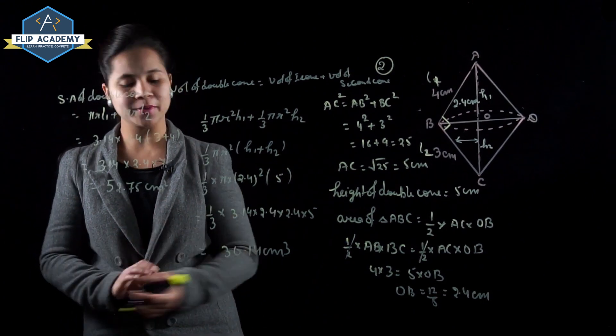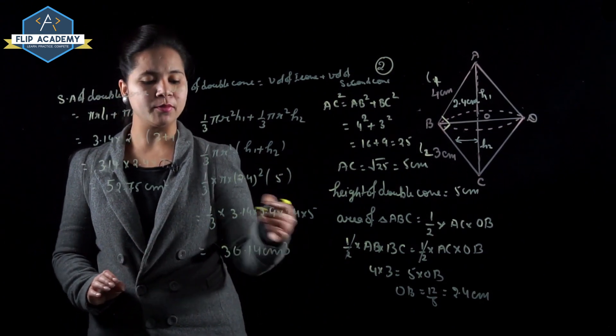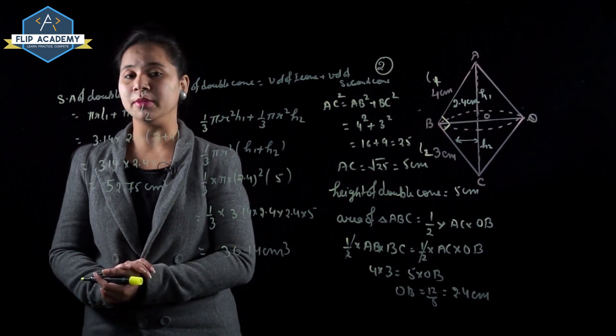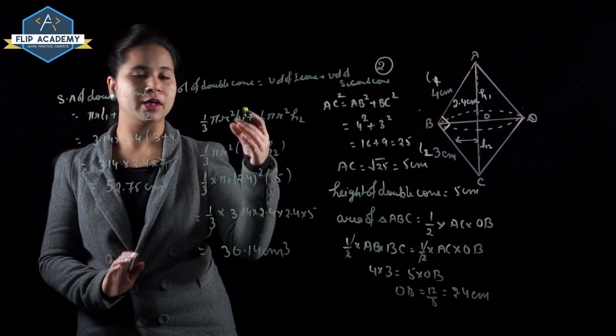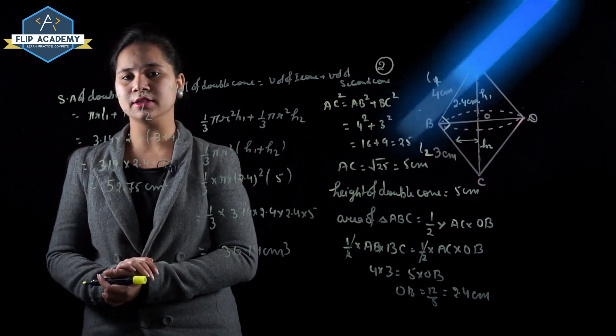Volume of double cone = 30.14 cm³ and surface area = 52.75 cm². Q2 is complete. Moving to Surface Area and Volume Exercise 13.5, Q3.